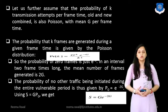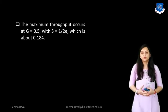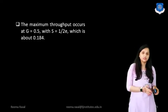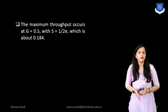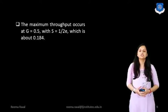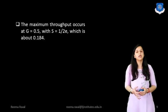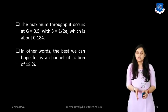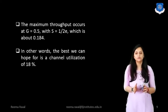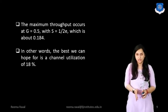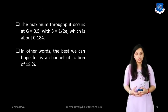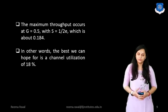This is derived using the Poisson distribution equation. The maximum throughput occurs at G = 0.5, with S = 1/(2e), which is approximately 0.184. So we can say that the efficiency of Pure ALOHA is 18.4%. In other words, the best we can hope for in channel utilization using Pure ALOHA is approximately 18.4%.